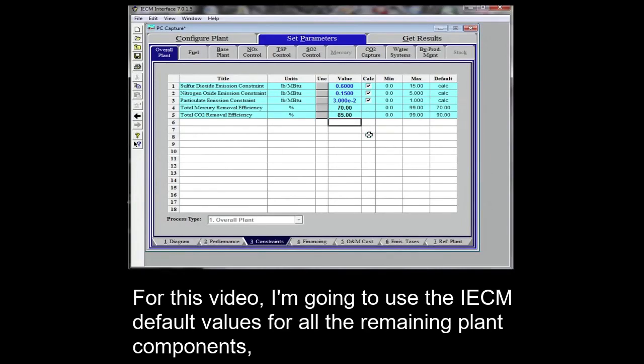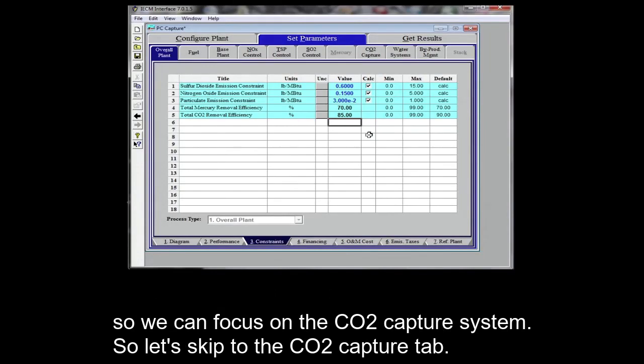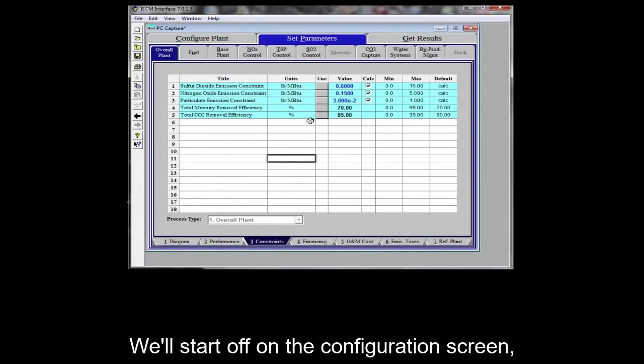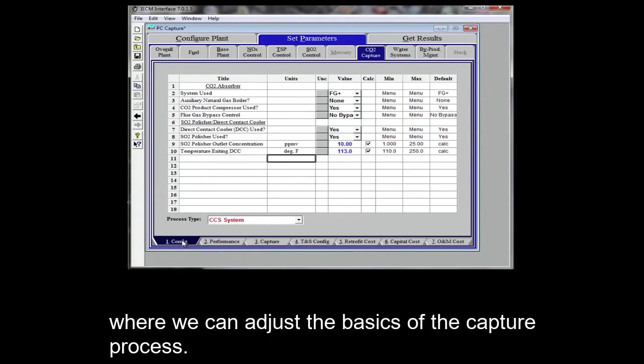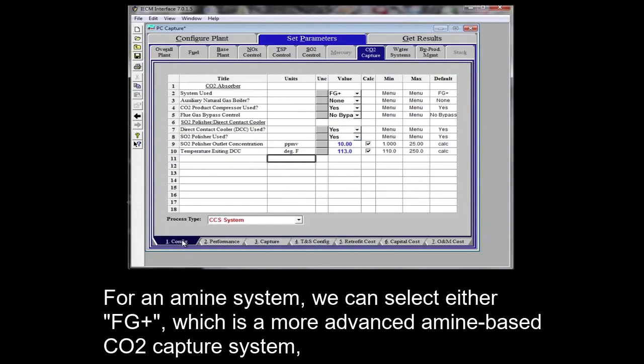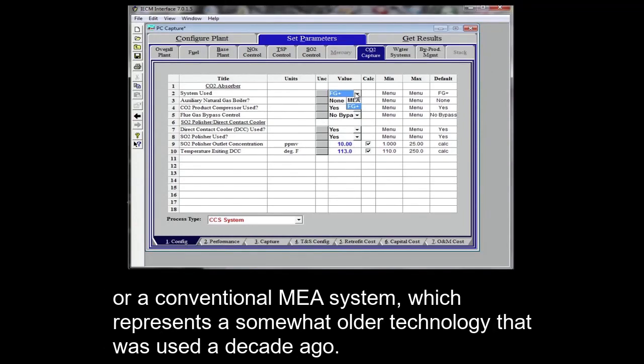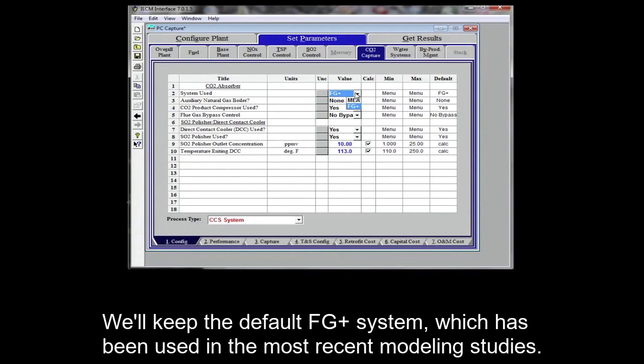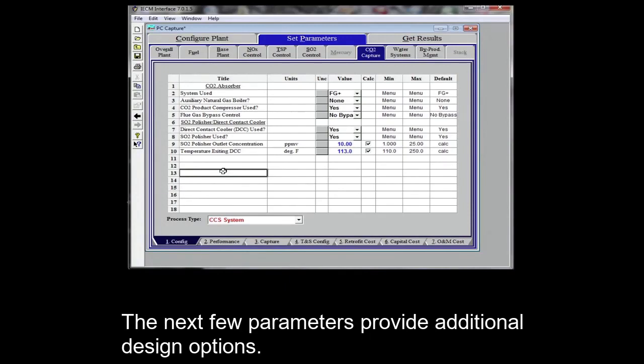For this video, I'm going to use the IECM default values for all the remaining plant components so we can focus on the CO2 capture system. So let's skip to the CO2 capture tab. We'll start off on the configuration screen where we can adjust the basics of the capture process. Here there are several parameters that can be adjusted in order to tailor the solvent-based capture system. For an amine system, we can select either FG+, which is a more advanced amine-based CO2 capture system or a conventional MEA system, which represents a somewhat older technology that was used a decade ago. We'll keep the default FG+, which has been used in the most recent modeling studies.